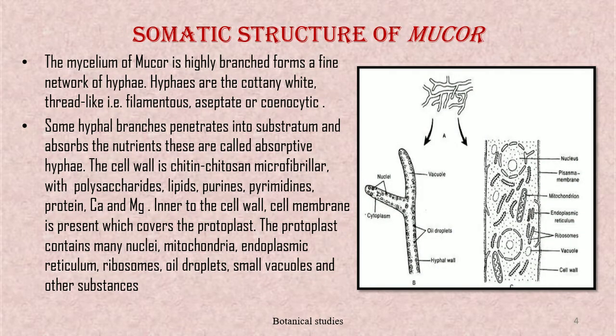The mycelium of Mucor is highly branched and forms a fine network of hyphae. Hyphae are cottony white thread-like, filamentous, aseptate or coenocytic. Some hyphal branches penetrate into the substratum and absorb nutrients; these are called absorptive hyphae. The cell wall is chitin-chitinous and microfibrillar, with polysaccharides, lipids, purines, proteins, calcium, and magnesium.